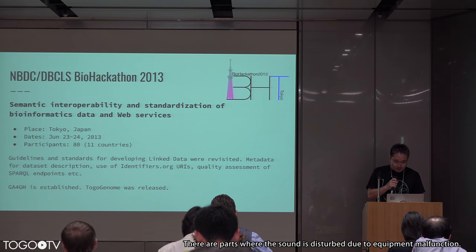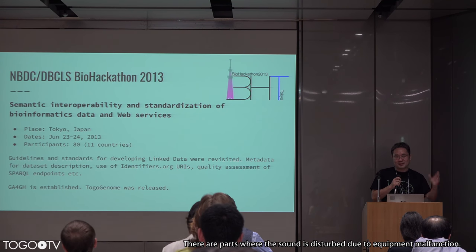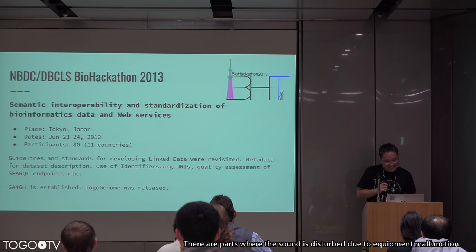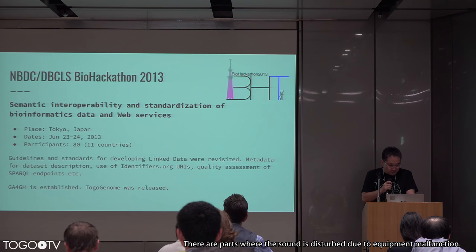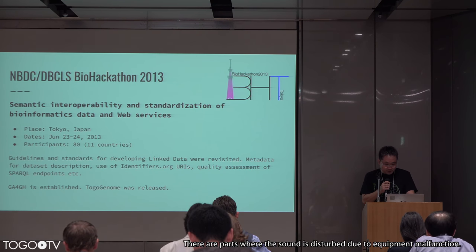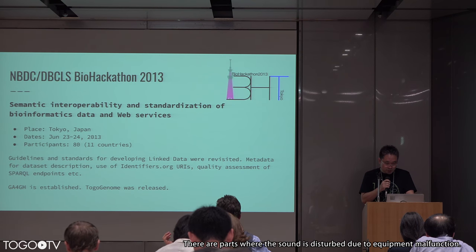In 2013 we organized the meeting in Tokyo, visiting the new Tokyo Skytree, which is 634 meters high. We gathered an increased number of participants — about 80 from 11 countries. We revisited guidelines and standards for developing linked data, metadata for dataset description, use of identifiers.org URIs, and quality assessment of SPARQL endpoints. That year, the Global Alliance for Genomics and Health (GA4GH) was established, and our RDF-based genome database TogoGenome was released.